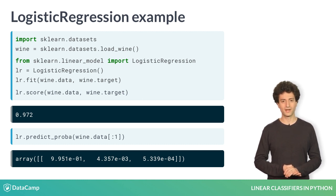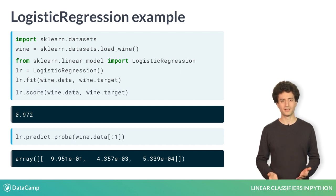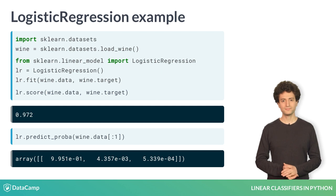As a reminder, the little 'e' means 10 to the power of. So you should interpret that first probability as 9.9 times 10 to the power of negative 1, or 0.99, or 99%. We'll discuss these probabilities more in Chapter 3.